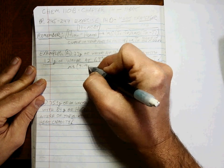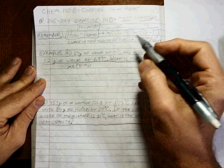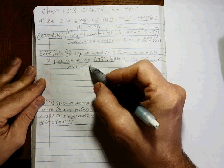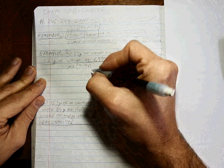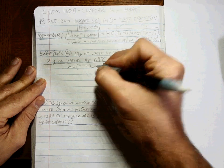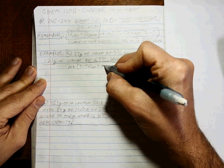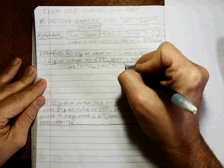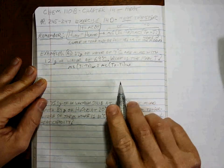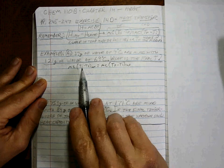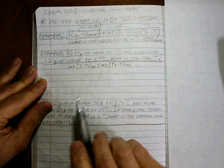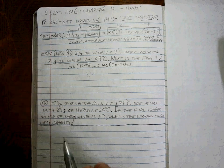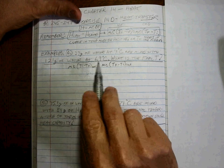So heat lost equal heat gain, which means MC T initial minus T final for the part that's losing the heat. And obviously which one is losing the heat? The warmer. So we'll call it hot. Is equal to MC T final minus T initial for the cold.